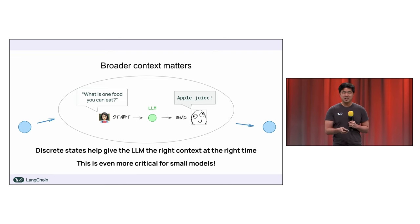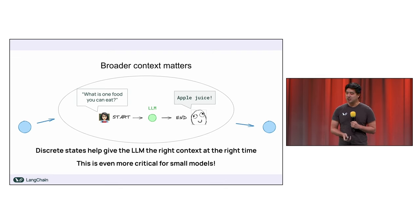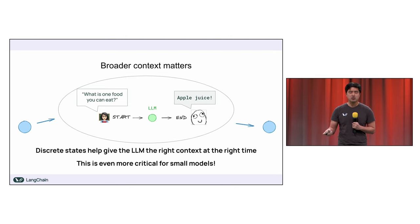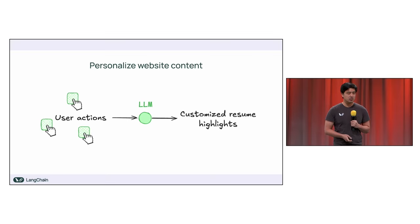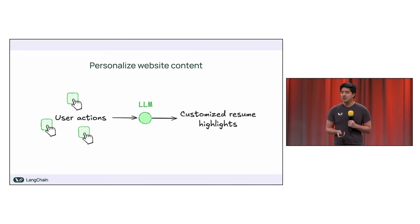Bringing it full circle, this is even more important for small models, which can deviate pretty significantly from expectations if not carefully prompted and managed. And since this is a web AI conference, let's look at applying this to a web example called generative UI. Let's say you want to take actions a user is taking on a page — such as clicks on links or buttons — and use that information to update the look and feel of a web page. Specifically, if I have a personal website, I want to use what the user clicks on to determine relevant highlights from my resume, and do this entirely client-side in the browser.